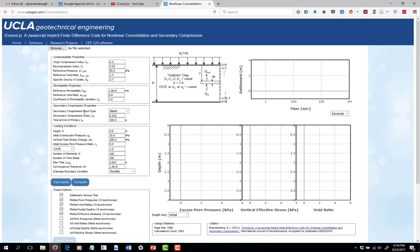For secondary compression properties, there are two types of input that users can select, either basic or advance. If you select the basic option, the secondary compression index is entered here and the time at the end of primary consolidation is entered here as well. What this does is assumes that the reference secondary compression line from which you're computing the secondary compression strain rate is exactly the same as the normal consolidation line. It's probably the simplest assumption that can be made and is probably the most common way that users will choose to input their parameters into the code.